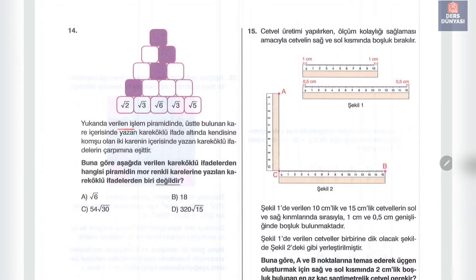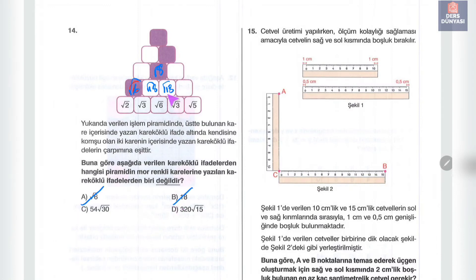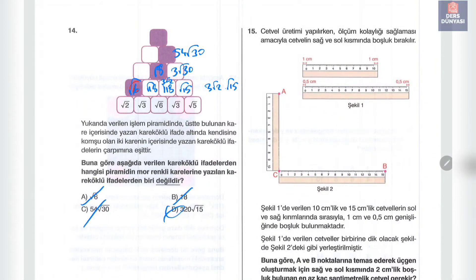On dördüncü soruda işlem piramidinde üstteki kare alttaki iki karenin çarpımına eşit. Kök 2 × kök 3 = kök 6; kök 3 × kök 6 = kök 18 = 3 kök 2. 3 kök 2 × kök 15 = 3 kök 30; 3 kök 2 × 3 kök 30 = 9 kök 60 değil, 54 kök 30 var. Hangisi değil diye sorduğundan cevap bu şıktır.